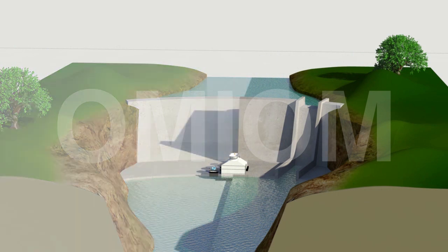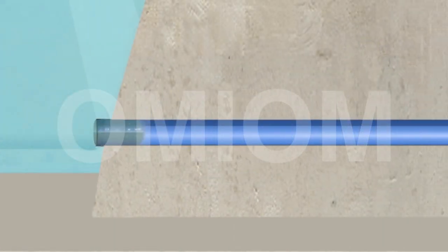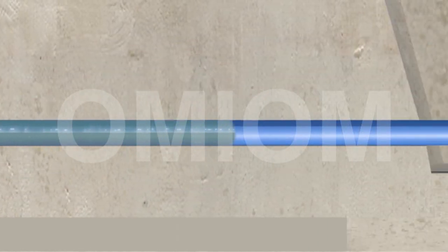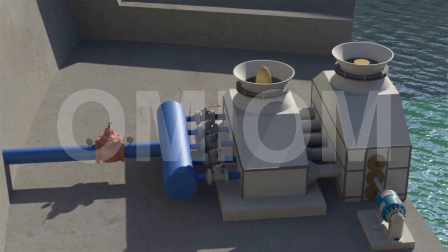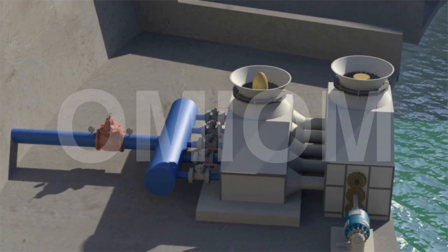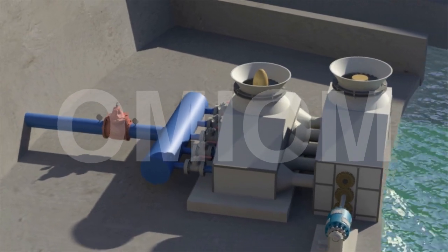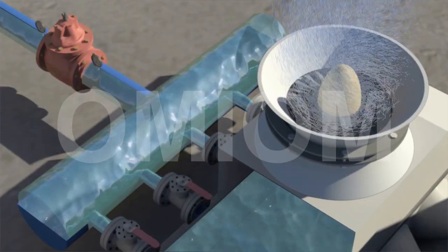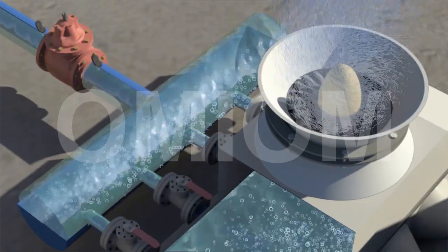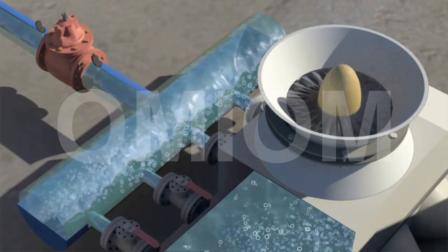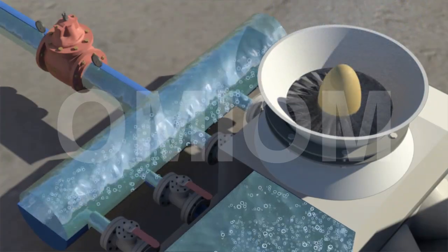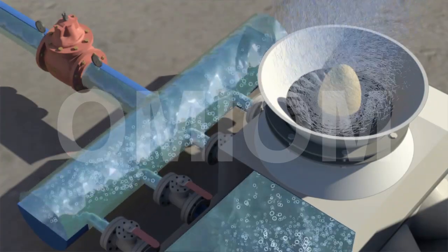As water from the dam enters the Hydroair assembly, its pressure creates a condition for atmospheric air to be sucked in through various air inlet ports. Air in large volume enters the assembly and mixes with water. Billions of air bubbles are formed, aerating and transferring oxygen to each and every drop of water.